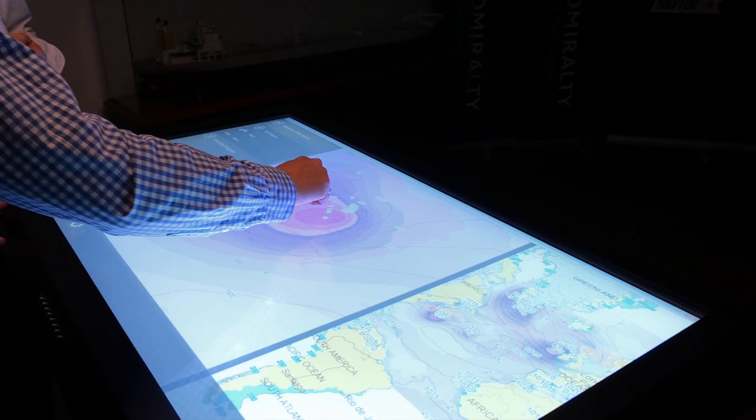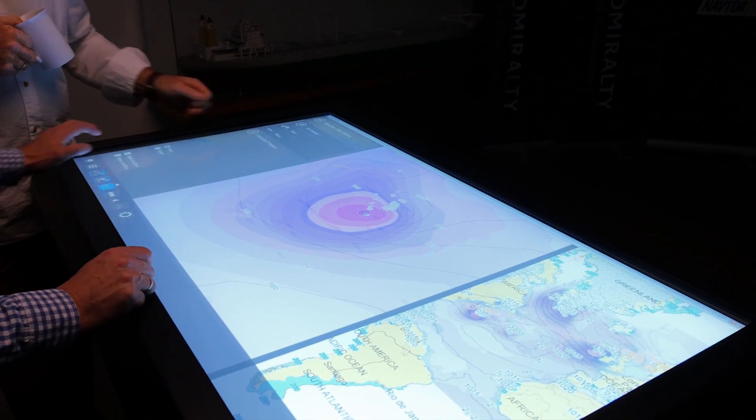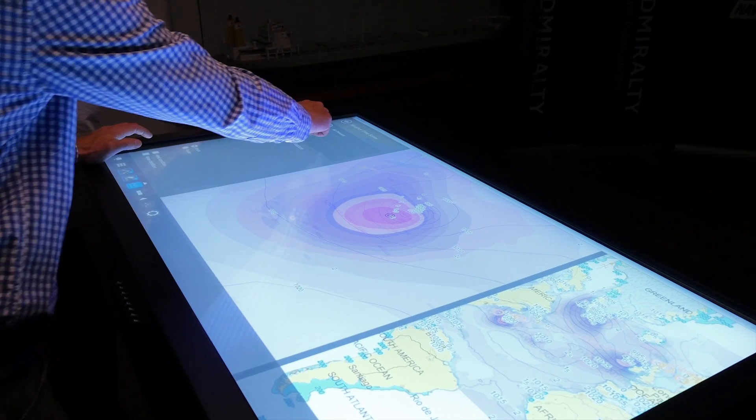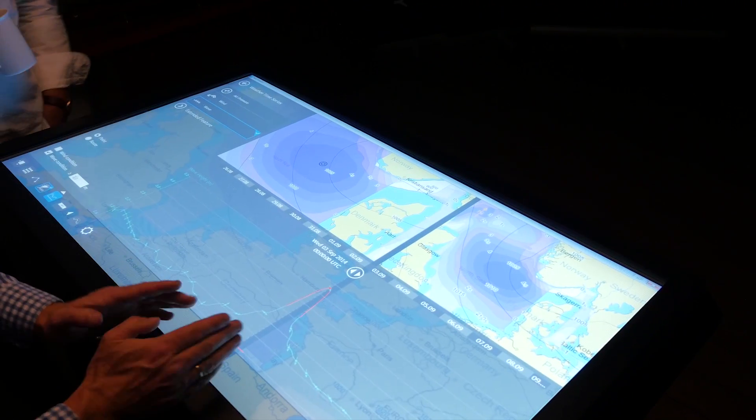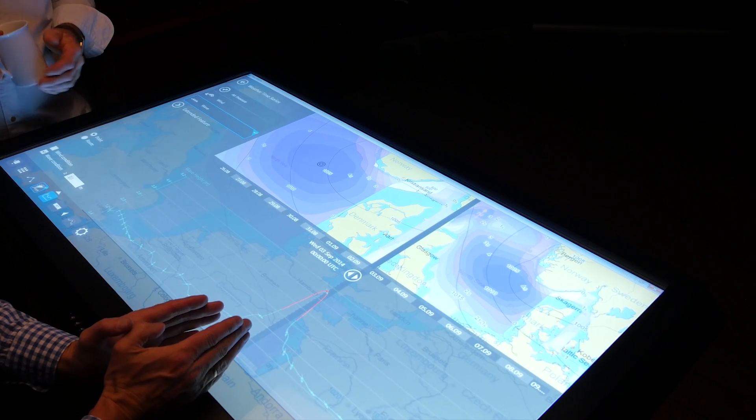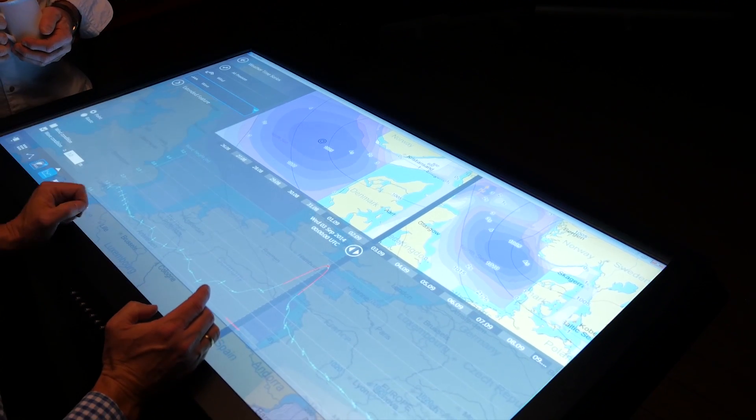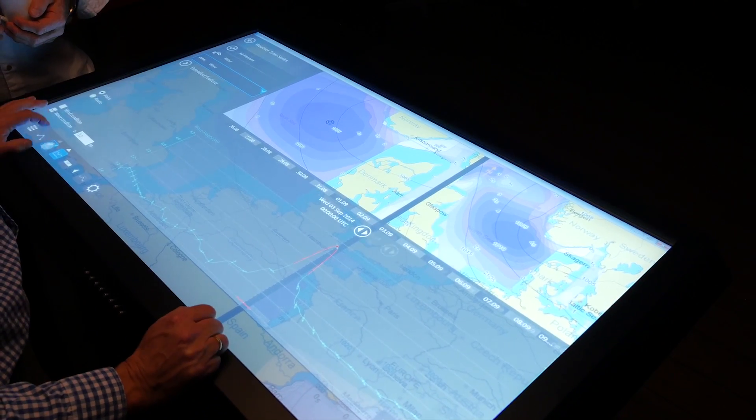The weather time series functionality ensures you can easily see how wind and waves develop along your planned route, while the weather alarm feature helps users identify days of heavy weather or good weather windows at a glance.